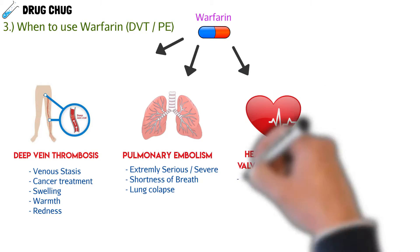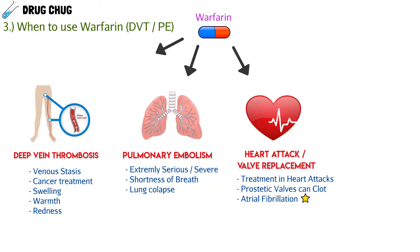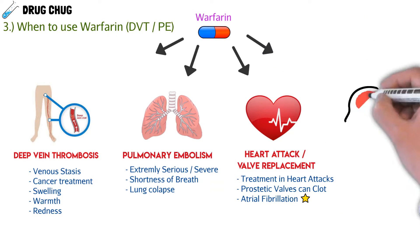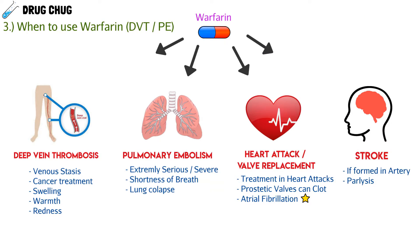We also see warfarin used in patients who have had a heart attack or any valve replacement, because prosthetic metal valves can cause clots — the body recognizes that the metal shouldn't be there. Patients with atrial fibrillation, where the atria isn't pumping correctly, can also develop blood clots due to poor blood flow. Lastly, warfarin is used in patients who have had a stroke, for prophylaxis to prevent a secondary stroke. In all these scenarios, we push the patient toward more bleeding than clotting.